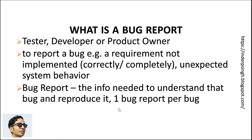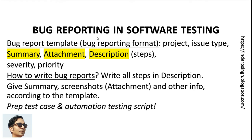There should be one bug report per bug with all the problems mentioned in that single bug report. The bug report template or bug reporting format defines which information is needed in your bug report, and it is according to your project's needs. The common information needed includes project name, issue type (for example, bug or enhancement), summary, attachment or bug report zip file, and description with steps and actual result with the problem. Out of these, the summary, screenshots, and description with steps and the actual problem are the most important.